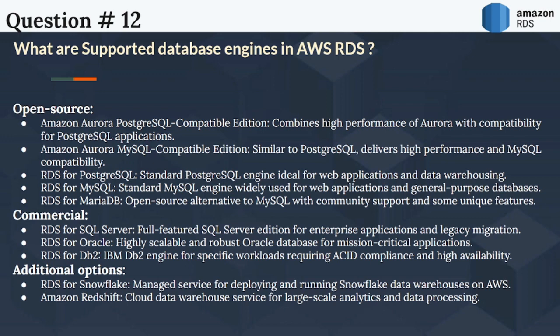Additional options include RDS for Snowflake, a managed service for deploying and running Snowflake Data Warehouse on AWS, and Amazon Redshift, a cloud data warehouse service for large-scale analytics and data processing. Choosing the right engine depends on factors like your application requirements, development skillset, budget, and existing infrastructure. It's always recommended to research and compare the engines before making a decision.